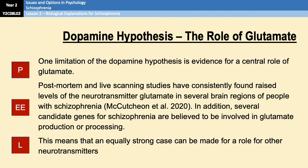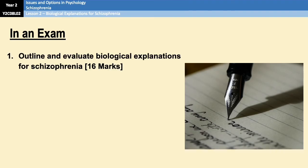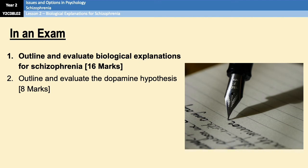Those are your four evaluation points — two for genes and two for neural correlates — which should set you up perfectly for any eventuality. In the exam so far, this is the essay that has come up for this topic. Just because it's come up once before doesn't mean it won't come up again, and there are various different variations they could quiz you on. For example, they could ask you to outline and evaluate the dopamine hypothesis for eight marks — a three-mark outline and five-mark evaluation.